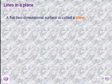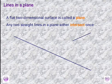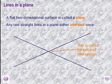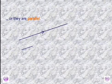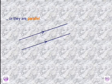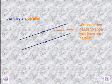There are two types of lines: intersecting lines and parallel lines. Intersecting lines are lines which meet at the point of intersection. On the other side, we have parallel lines, and these are lines which will never meet. They are shown using arrows.